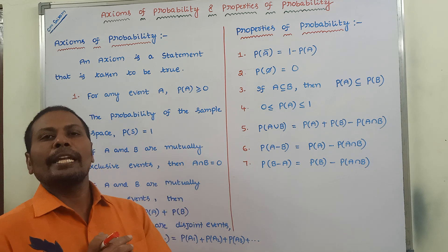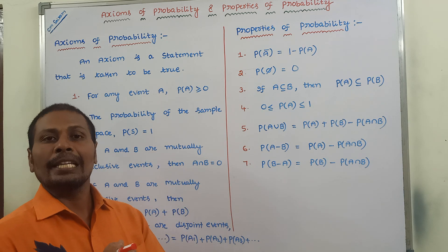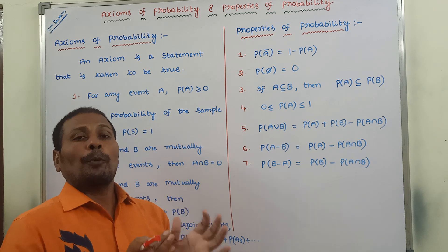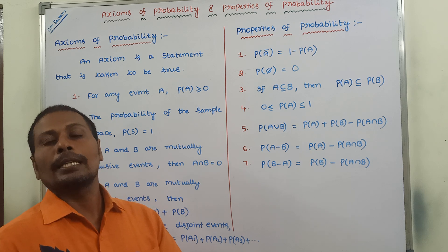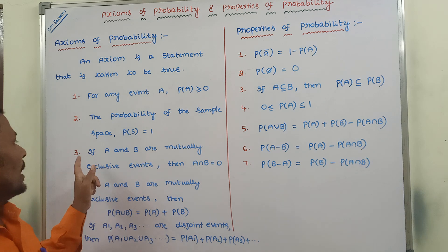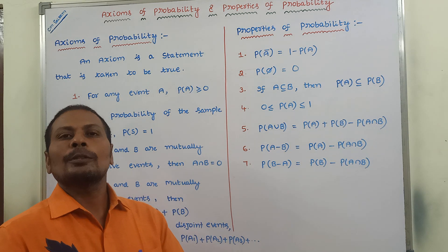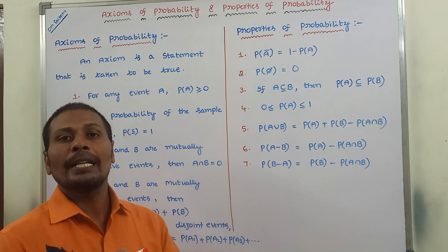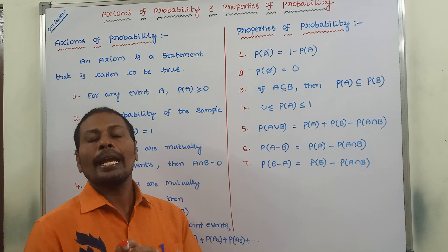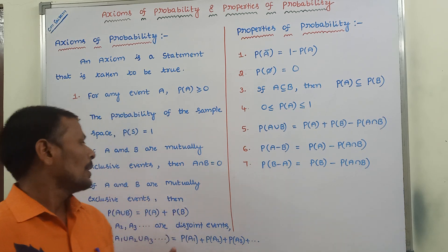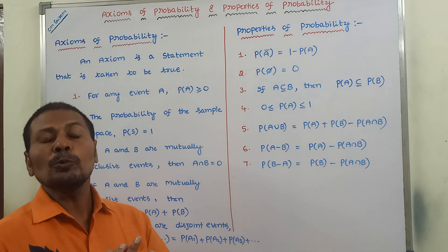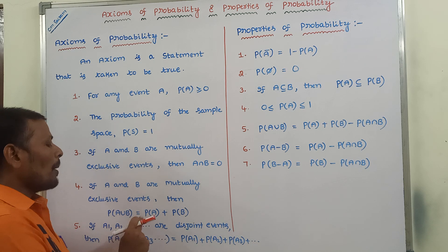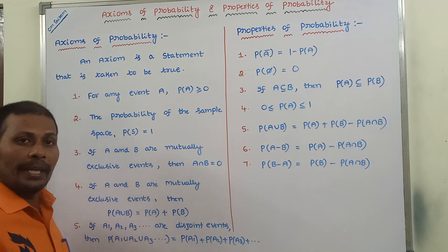Suppose we are taking an event A. The probability of that event A is always greater than or equal to 0. Second point: the probability of the entire sample space, that is P of S, is equal to 1. Third point: if A and B are two mutually exclusive events, then we can say that there is no common element between those two events. That means A intersection B is equal to 0.